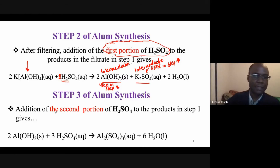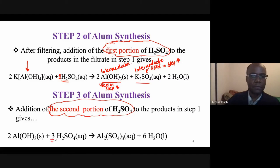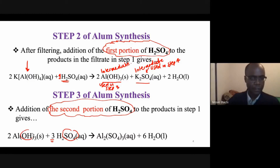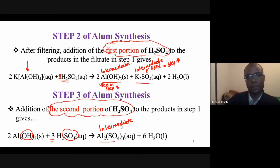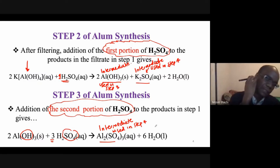In step three, you react the product with a second portion of sulfuric acid — three equivalents — forcing the reaction to completion. The sulfate from sulfuric acid replaces part of the OH groups, and you get aluminum sulfate plus water. Aluminum sulfate is another intermediate: it's made here but will be used up in step four.